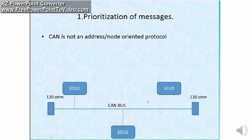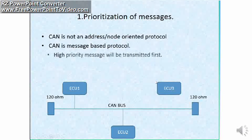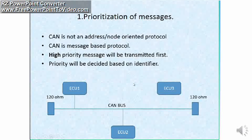So you can see in this diagram, we have 120 ohm resistors at both sides. CAN network must be terminated with 120 ohm resistance so the network impedance will be matched. And we have different ECUs, ECU1, ECU2, and ECU3.